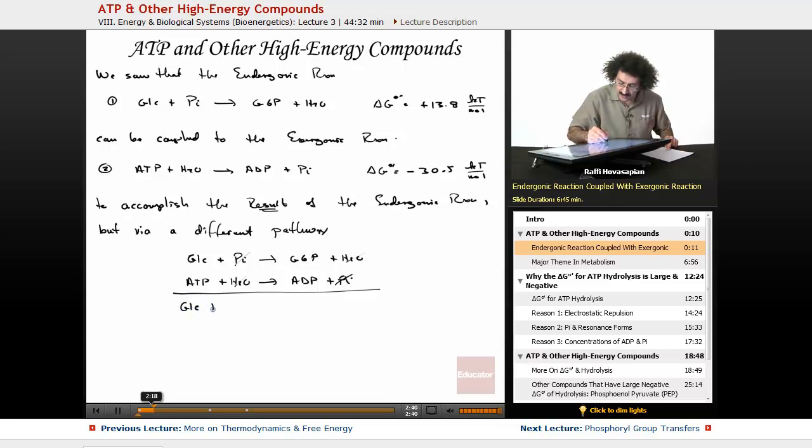We have GLC plus ATP going to G6P plus ADP. And the delta G for this, which is just the sum of the delta Gs of the previous reactions, we ended up with minus 16.7 kilojoules per mole.